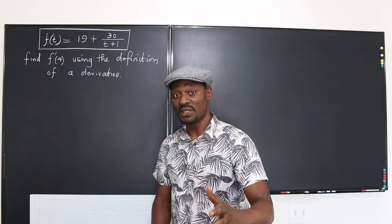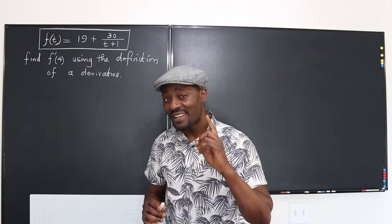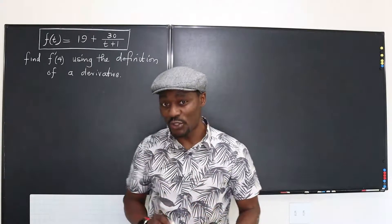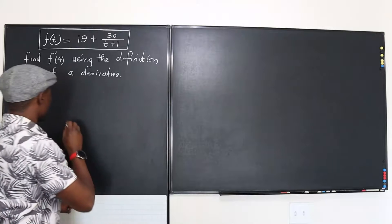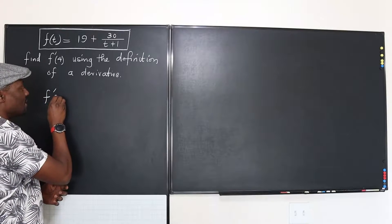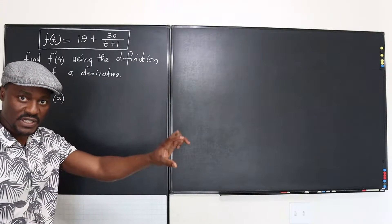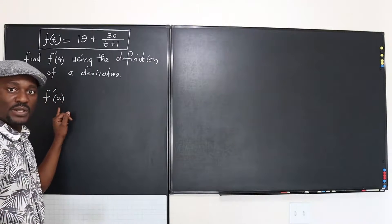The first thing you must know is that the definition of a derivative is basically the limit. We know that the derivative of this function at a point a, because there has to be a point where we're taking the derivative, let's say that point is point a.